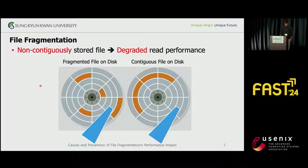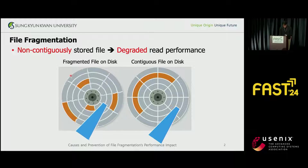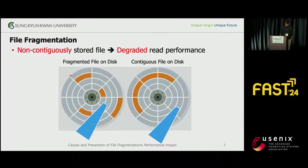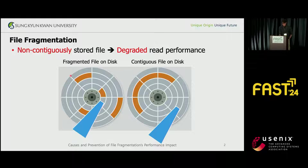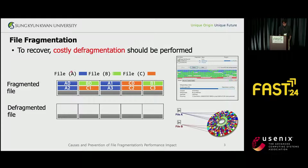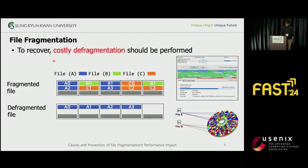I believe that everyone knows what file fragmentation is. File fragmentation was a serious issue in the hard disk era. The disk head must move across the sectors multiple times to read the whole file, while no seek operations are necessary when you read a contiguous file. Naturally, the more fragmented the file is, the poorer the read performance will be. The intuitive solution to mitigate the performance drop from file fragmentation was defragmentation. Defragmentation refers to the process of reading files one by one and then writing them back as contiguous files. Obviously, it is time-consuming and also requires a lot of I/O operations.